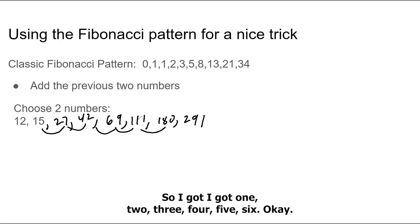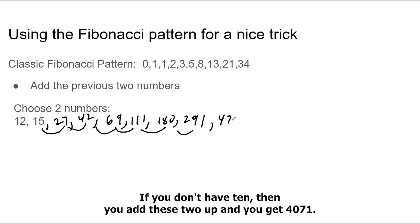So I got 1, 2, 3, 4, 5, 6, 7, 8. Alright, you want 10 numbers. That's the key. It doesn't work if you don't have 10. Alright, then you add these two up, and you get 471. Then you add these two up, and you get 762.